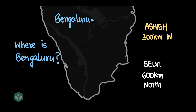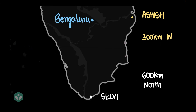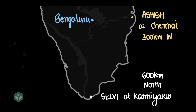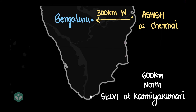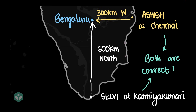But if you actually think about it, it's possible that both of them are telling the truth — but only if they are at different places. Ashish is at Chennai and Selvi is at Kanyakumari. So for Ashish, it's 100% reasonable to say Bengaluru is 300 kilometers west, and for Selvi, it's 100% correct from her perspective to say Bengaluru is 600 kilometers north. So both are correct.